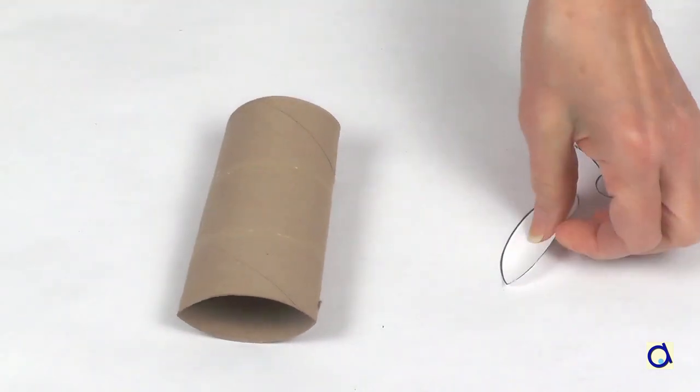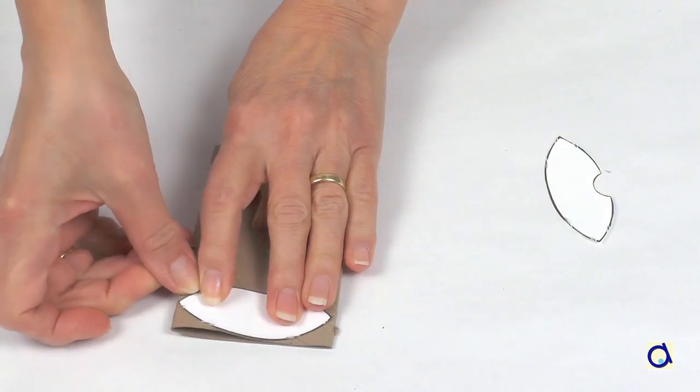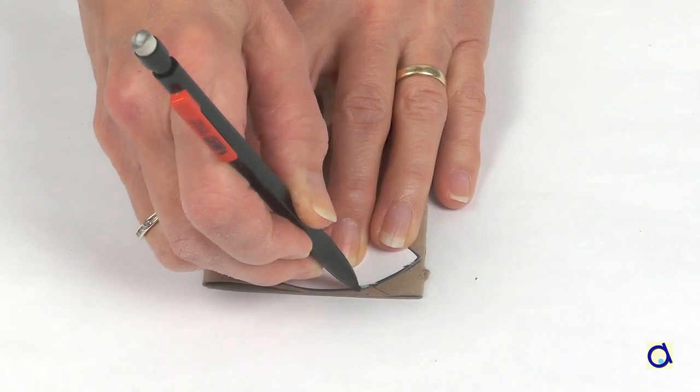Take the almond-shaped pattern and place it on one end of the roll. Draw the outline of the pattern.